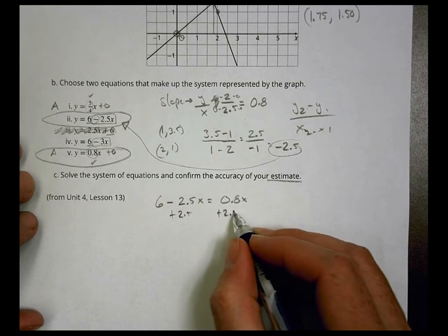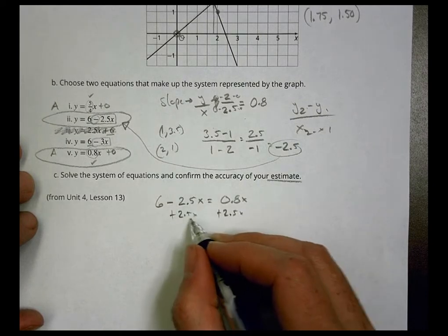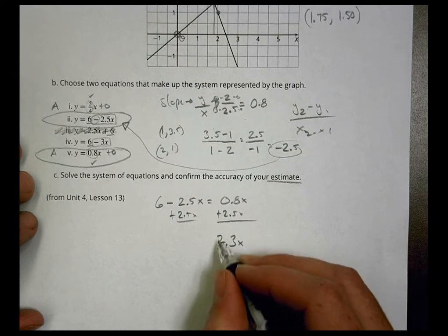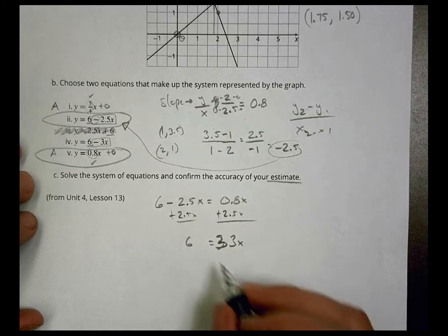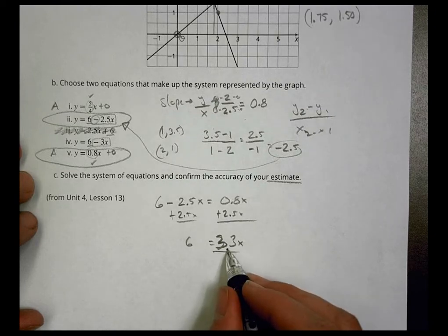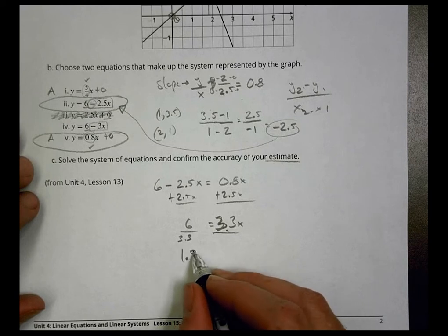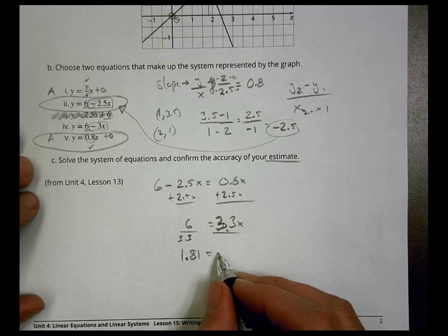So we're going to add 2.5x over here, so we have 3.3x. Let me add those up, equals six. And I divide both sides by 3.3. Six divided by 3.3 is 1.81 equals x.